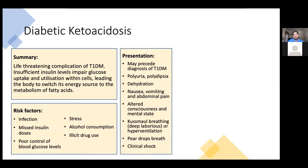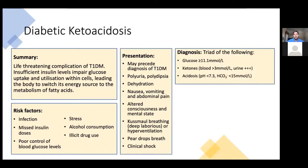DKA can precede a diagnosis of type 1 diabetes. It presents with polyuria, polydipsia, dehydration, nausea, vomiting, abdominal pain, altered consciousness, and pear drop breath — the sweet smell of ketones. The diagnostic triad maps onto the name: diabetic means blood glucose over 11.1; keto means blood ketones greater than 3, or 3+ on urine dipstick; and acidosis means pH less than 7.3 or bicarbonate less than 15.